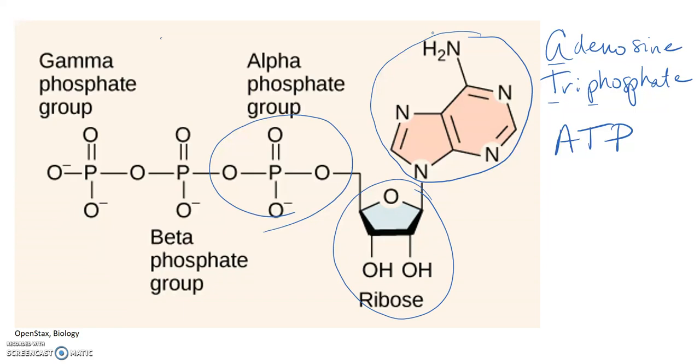However, as you can see, we have two additional phosphate groups — here's one and here's the other. That's why we call this adenosine triphosphate.